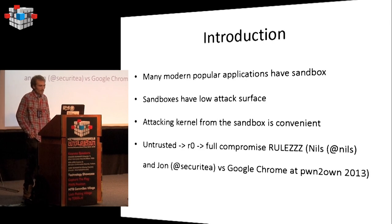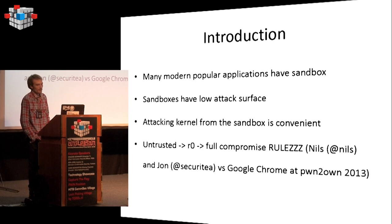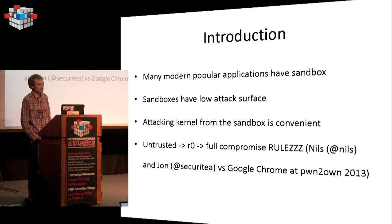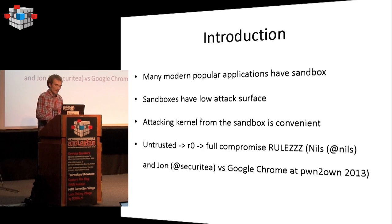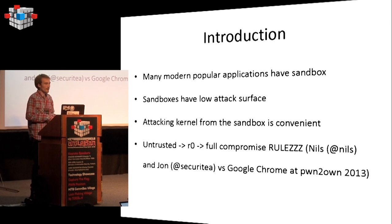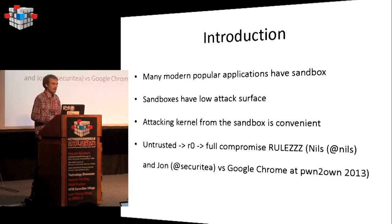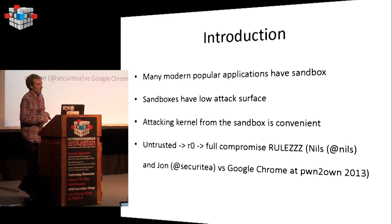At the moment, the exploitation world is going in a direction where major vendors make it so that you have to have a lot of combinations of vulnerabilities to compromise a box. For example, Google Chrome has a sandbox, Internet Explorer has a sandbox. So first of all, you have to bypass ASLR, DEP, and then escape the sandbox.